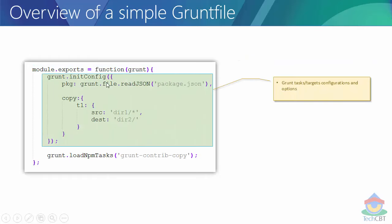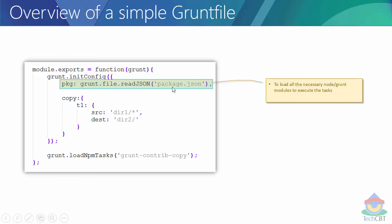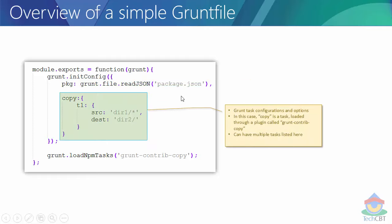You need to configure your particular tasks - all tasks will be made available as part of this configuration. The first thing is to specify package.json, which contains all the Node packages supposed to be loaded in order to have your application executed. Even for Grunt it really needs all those particular Node modules listed in package.json. This statement essentially reads all the contents of package.json. The next one is the task itself - in this case 'copy' is my task, and Grunt task configuration and options are always made available in this format.